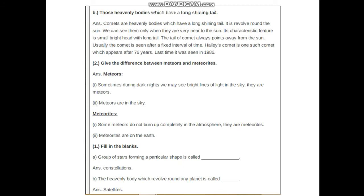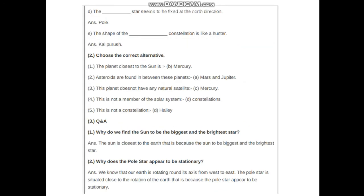Fill in the blank: Group of stars forming a particular shape is called constellation. The heavenly body which revolves around any planet is called satellite. The blank star seems to be fixed at the north direction: pole.